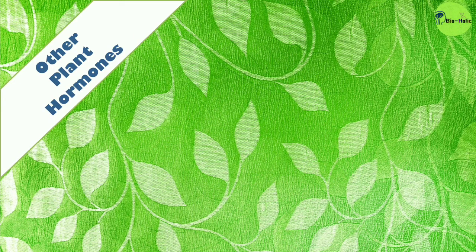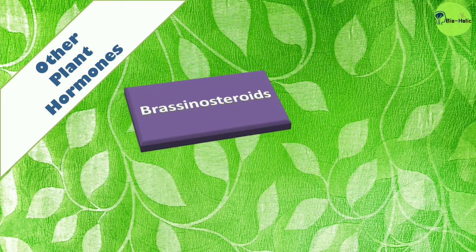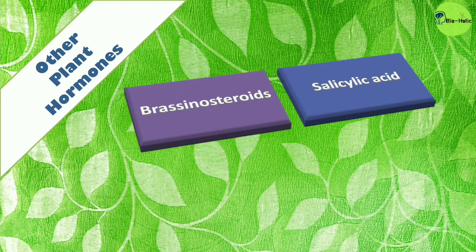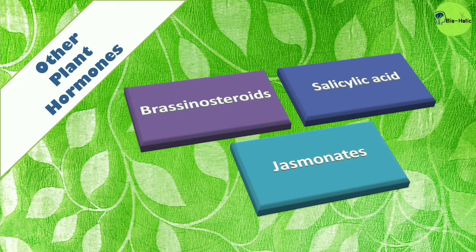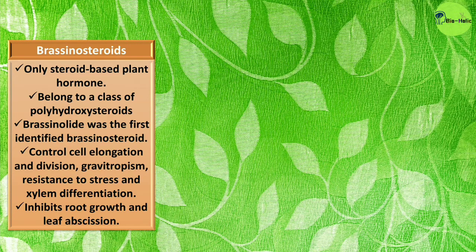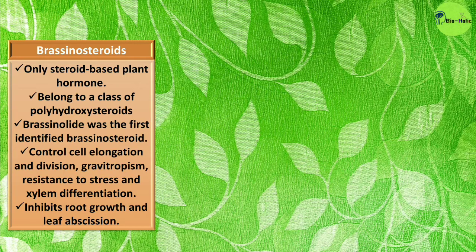There are some other plant hormones too: brassinosteroids, salicylic acid, and jasmonates. Brassinosteroids are the only steroid-based plant hormone, belonging to a class of polyhydroxy steroids. Brassinolide was the first identified brassinosteroid. They control cell elongation and division, gravitropism, resistance to stress, and xylem differentiation.